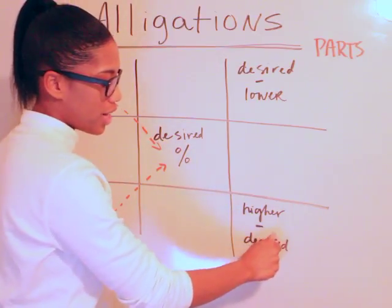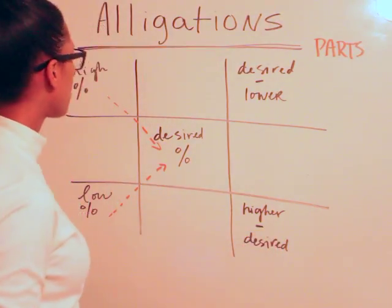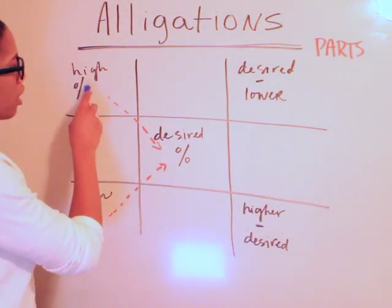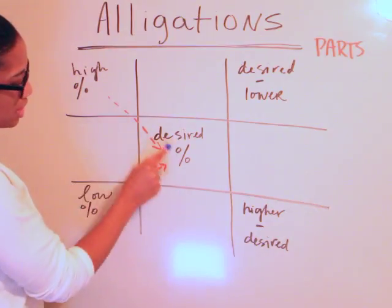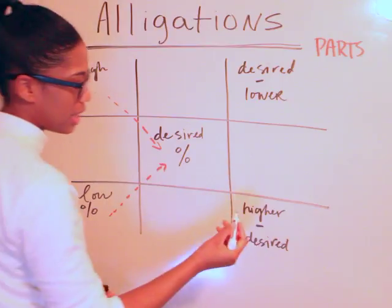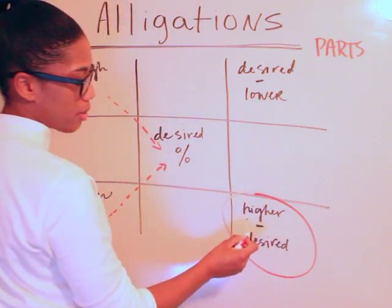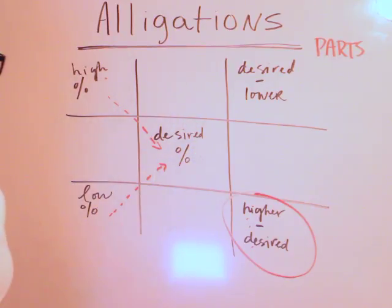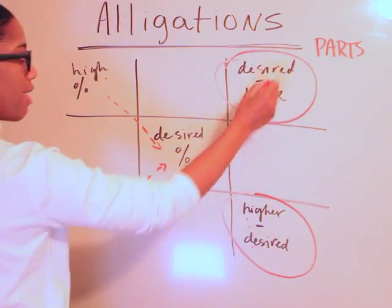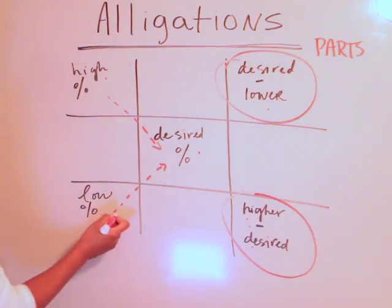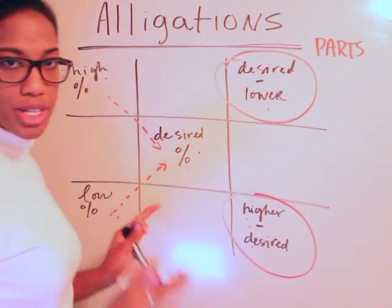You have high to desired percentage. Ultimately here, you're going to get higher minus desired. So you're going to get this number minus this number. And in this case here you're going to have desired minus lower, so you're going to have this number minus this number.